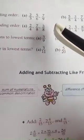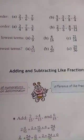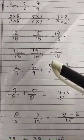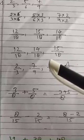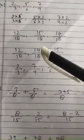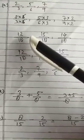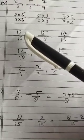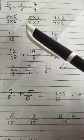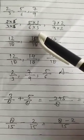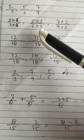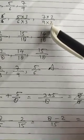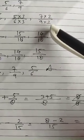Now in the denominator you have to make 18 in every fraction. In the 3 times table, 18 comes 6 times, so the first fraction will be multiplied by 6 on both the numerator and denominator. In the second fraction, 18 comes 3 times in the 6 times table, so it will be multiplied by 3. In the third fraction, 18 comes 2 times in the 9 times table, so this fraction will be multiplied by 2 on both sides.